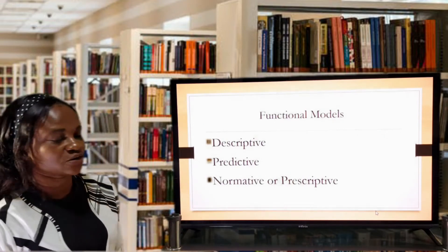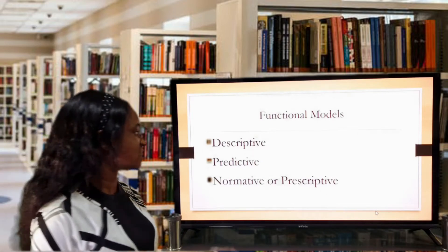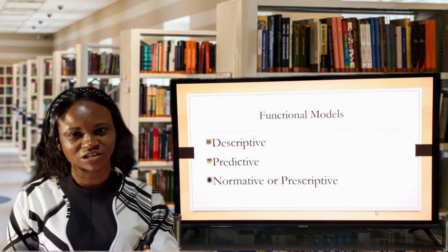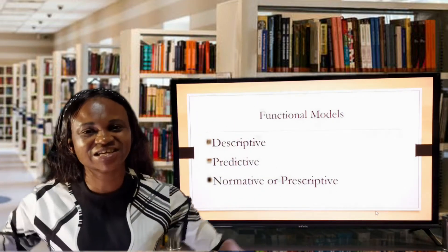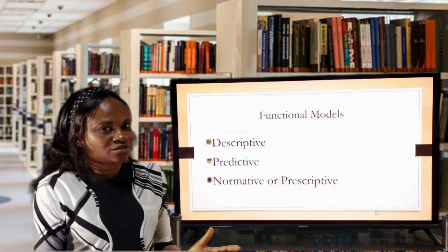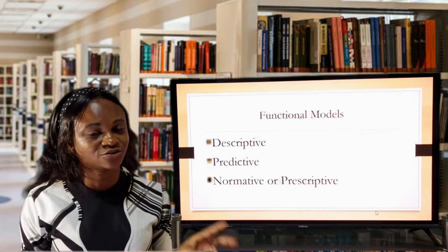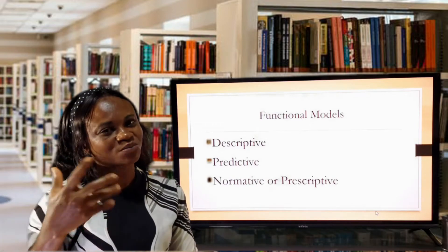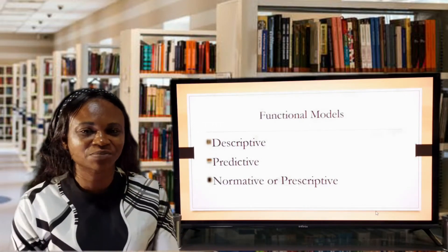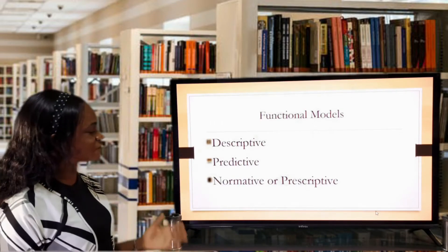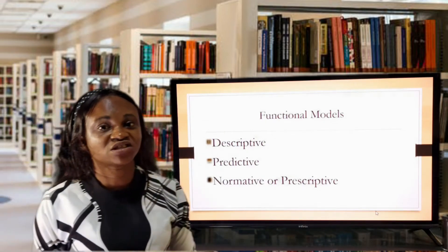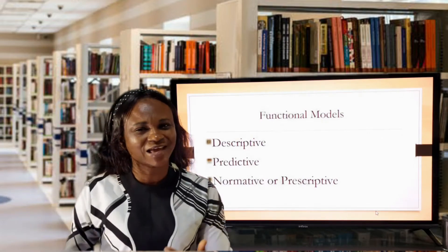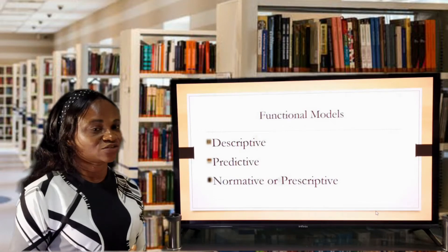We have the functional classification of models according to Gutta and Hira, and there are three sub-classifications under it: the descriptive model, the predictive model, and the prescriptive or normative model. When we talk about the descriptive model, it gives an overall overview — a summary describing the entire situation — and does nothing much more than description. That is why statistics is divided into two basic aspects: descriptive statistics and inferential statistics. Descriptive statistics just gives you a summarized view of your data. Every model that just seeks to describe a situation, give a summary, or give an overview without doing anything further is referred to as a descriptive model, classified under the functional model.